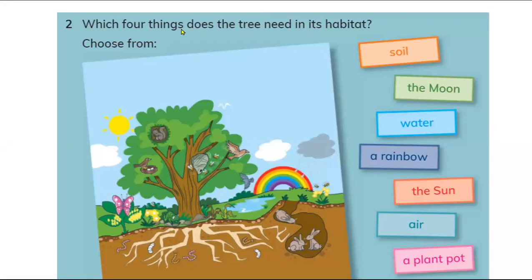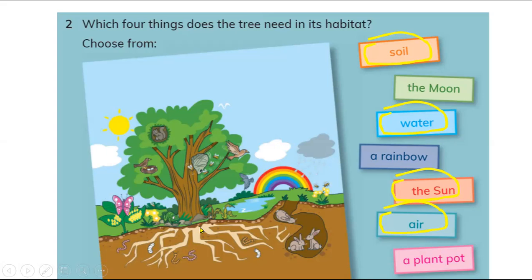Question two: which four things does a tree need for its habitat? Plants need soil, water, sunlight, and air. These are the four basic things plants need to grow in a habitat. This plant can grow well because this is a good environment for it.